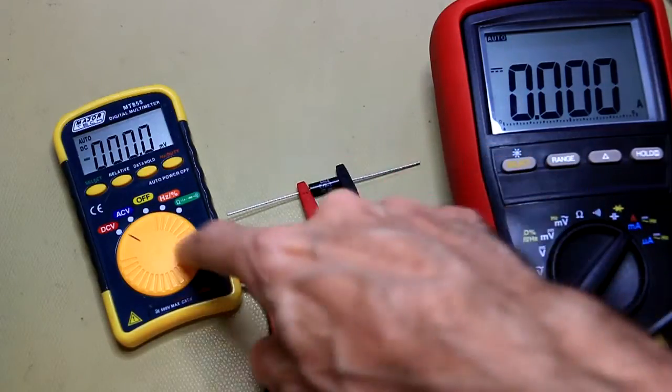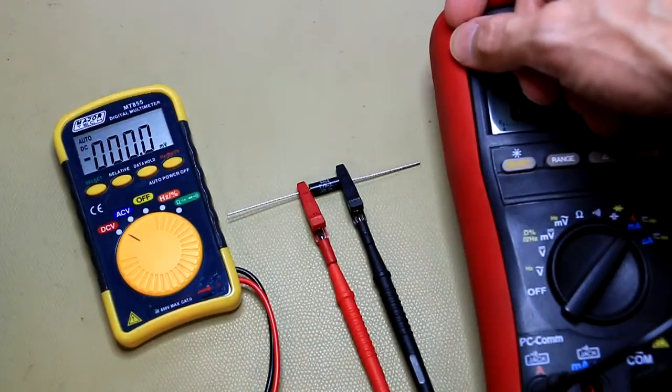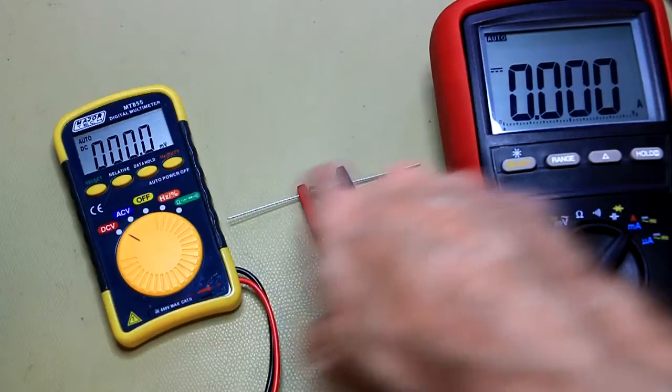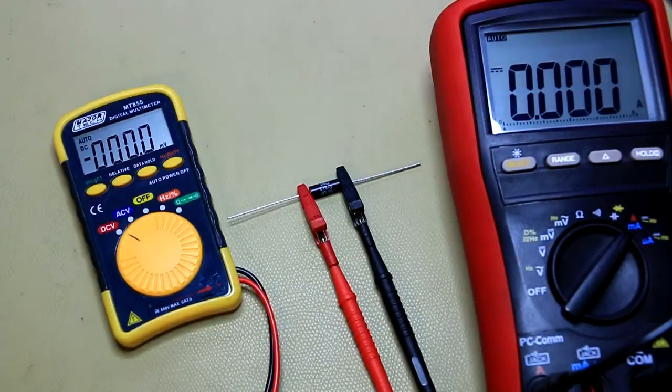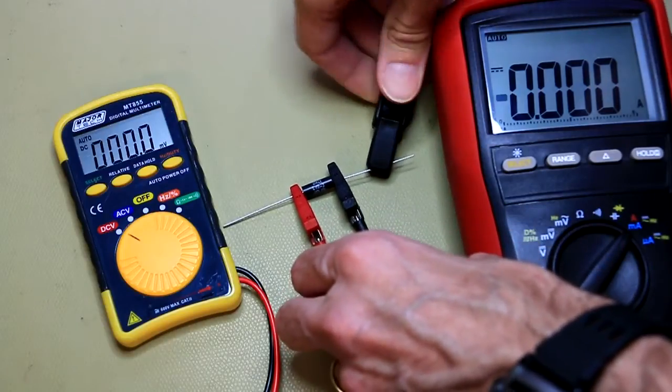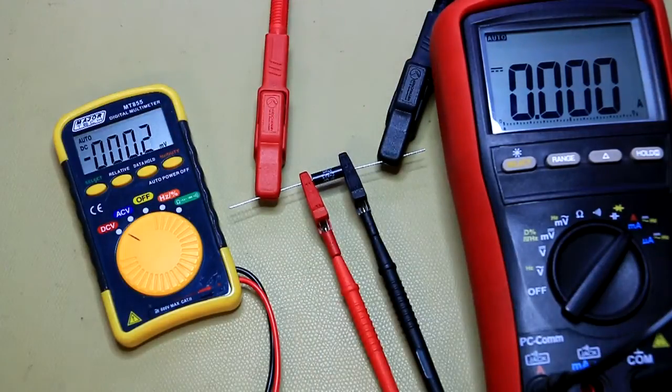I've got the multimeter set to DC volt, it's auto ranging, and it's going to be measuring the voltage drop across this resistor. So let me now hook up the supply to it. I've got the supply set to 100 milliamps on the current limit scale, so let's switch that on. There we go.